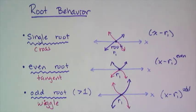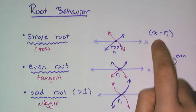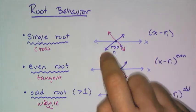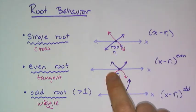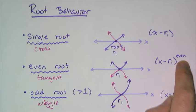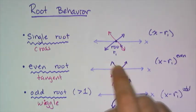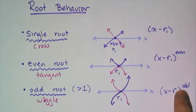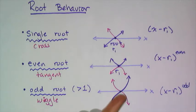If you remember what I said about the parent functions helping you out: a single root is really a linear root, so it's going to cross through like a line would. An even root is kind of like a parabola — like x squared — whose vertex was just on the x-axis. And the odd ones that are greater than 1, like third powers, act like cubics, meaning they're not going to cross straight through. It goes through and sort of swerves up through that root.